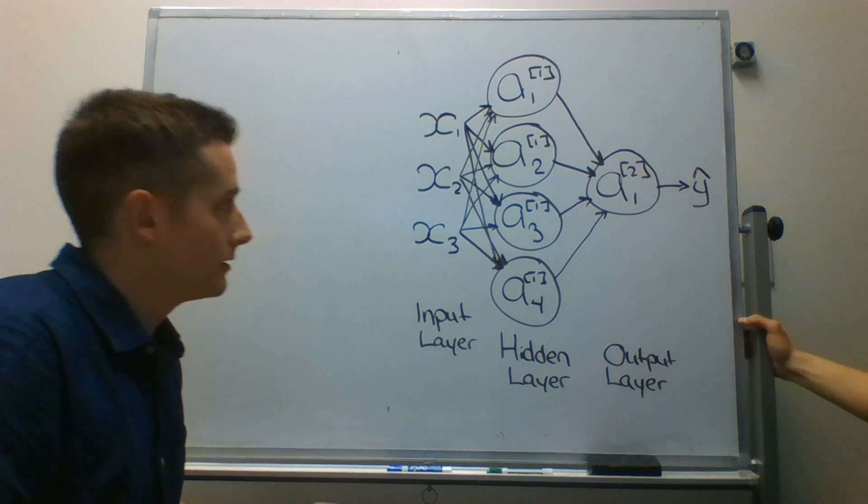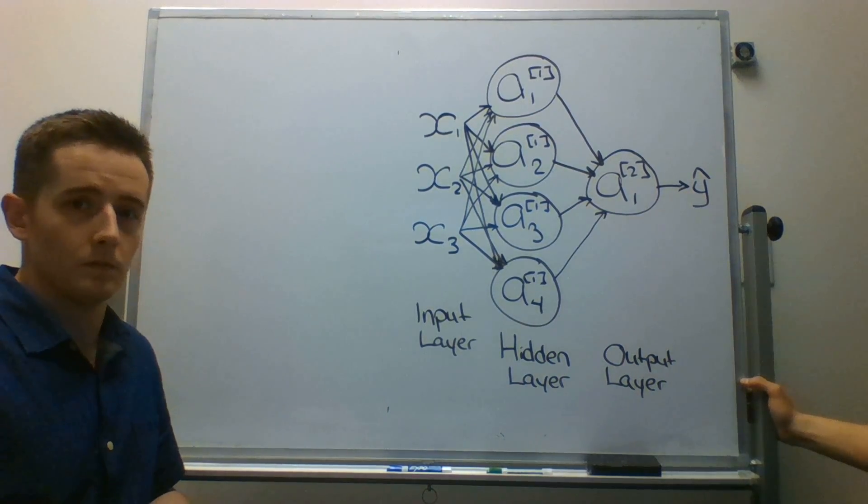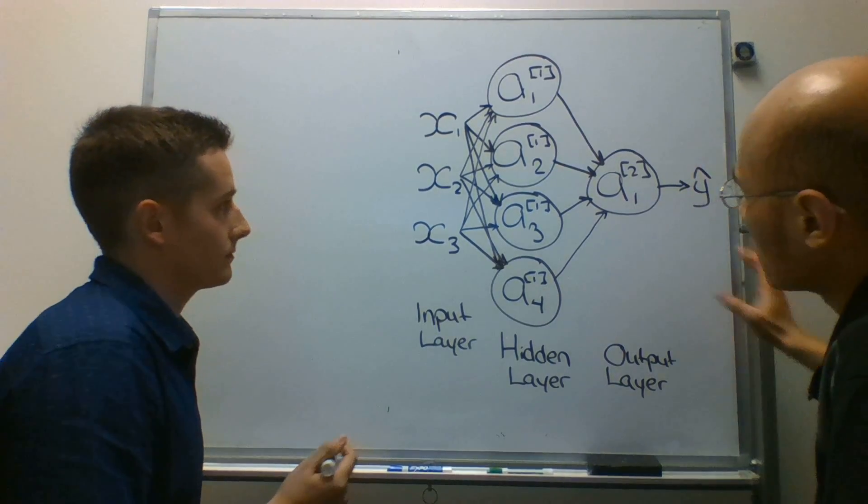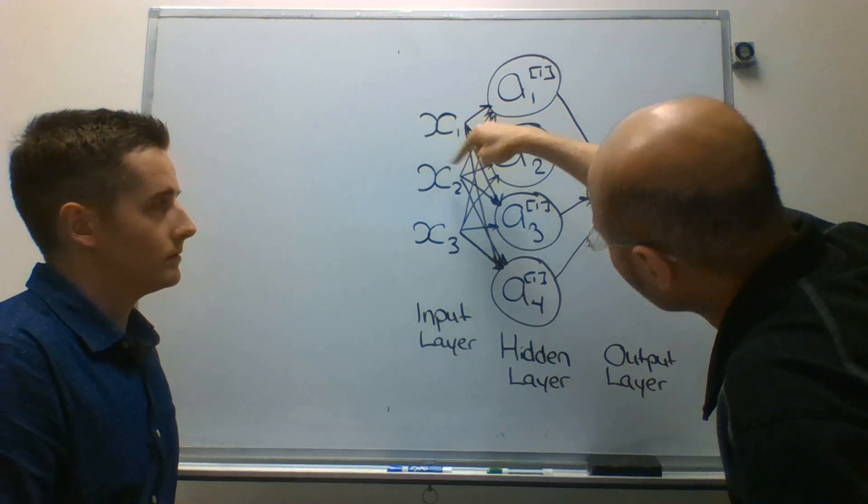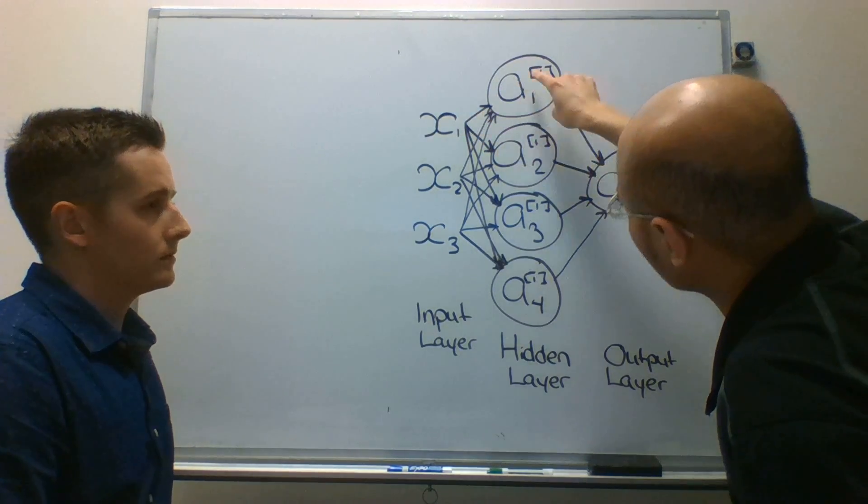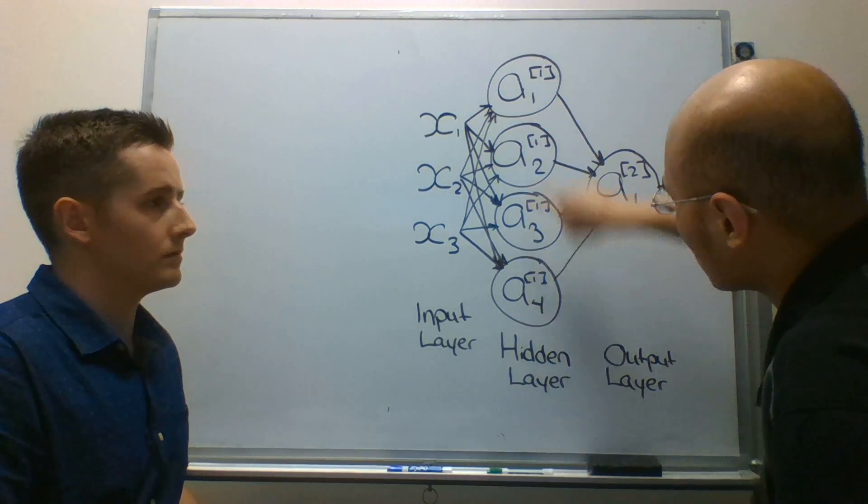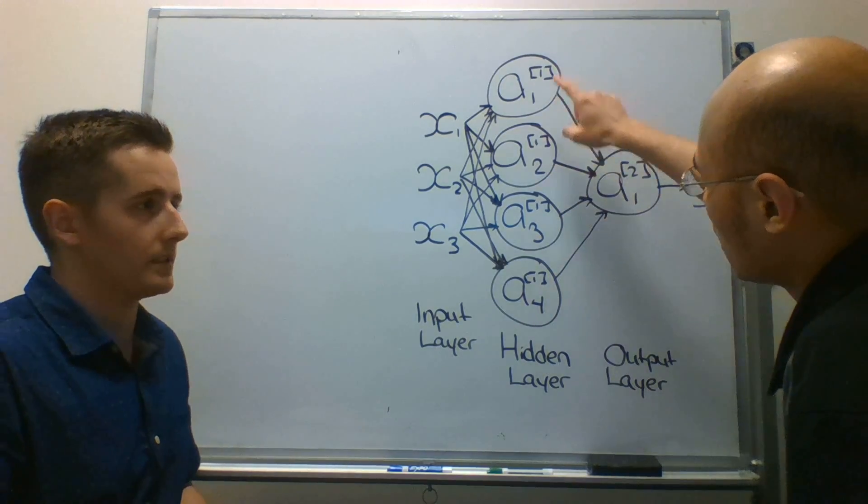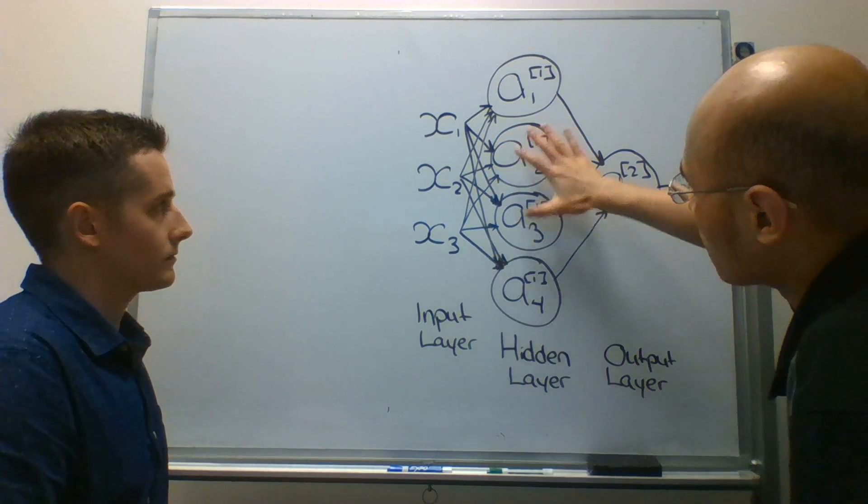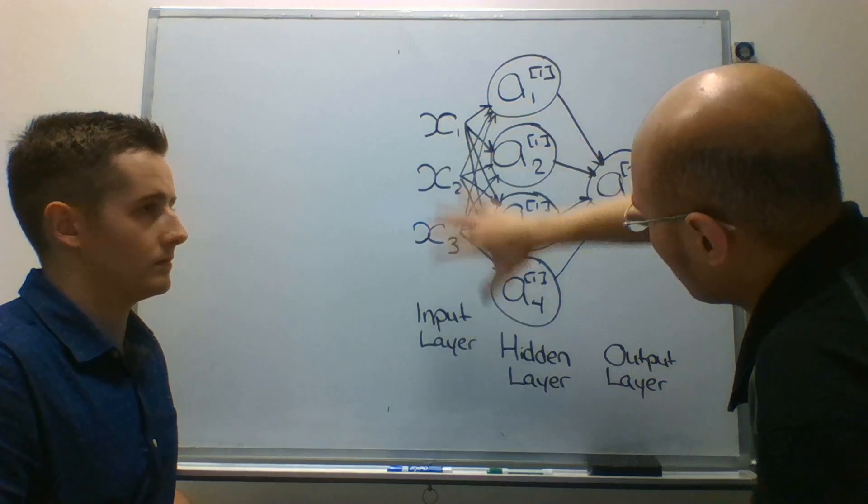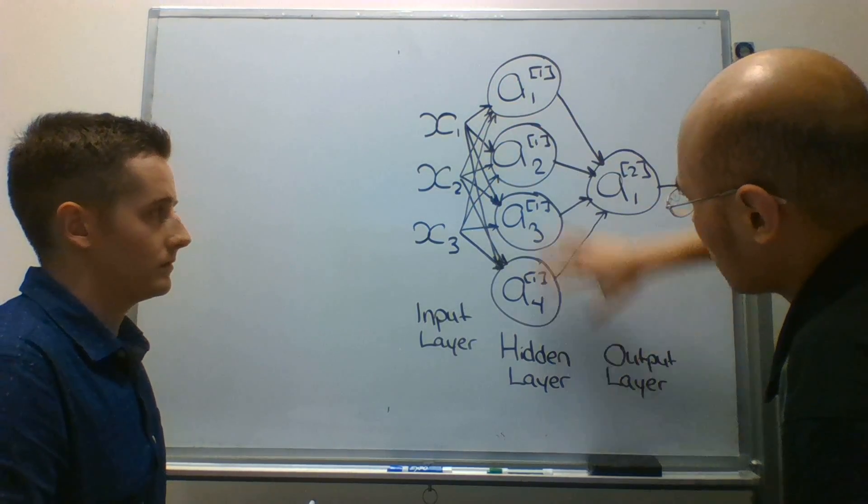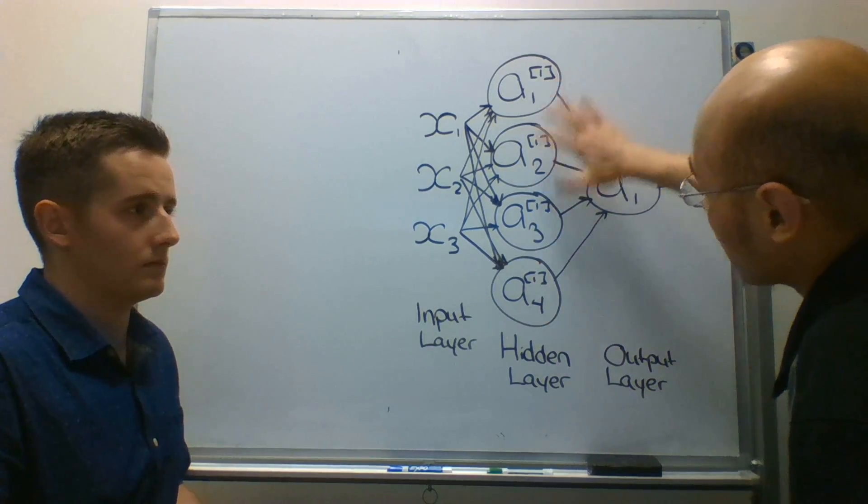Okay, good. So I think it's important to remember that in a neural network, every predictor connects to every neuron in this hidden layer here. So there are a total of 12 connections between the three predictors and the four nodes in the hidden layer.